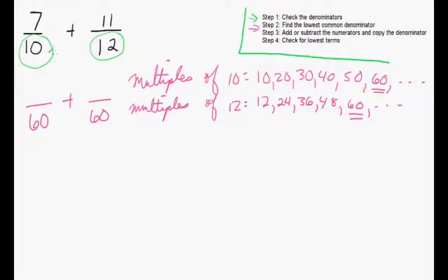In order to get 60, we have to multiply 10 by 6, so we need to multiply 7 by 6. And likewise, we have to multiply 12 by 5, so we need to multiply 11 by 5. That's going to give us 42 and 55. So we have 42 over 60 plus 55 over 60.